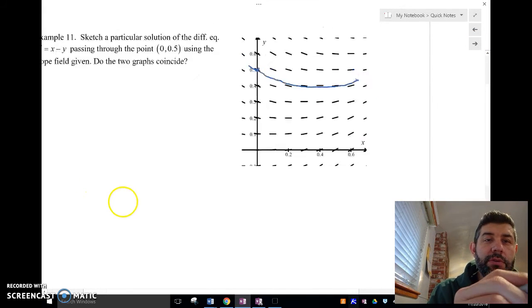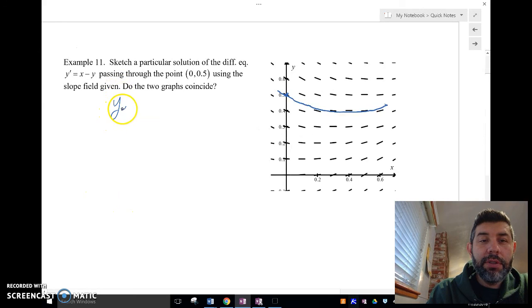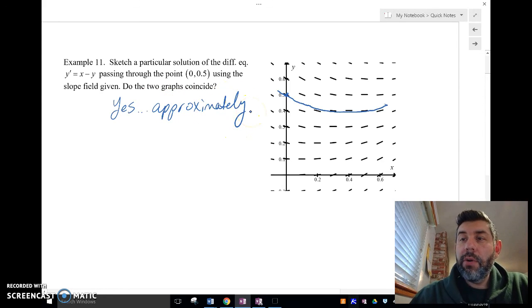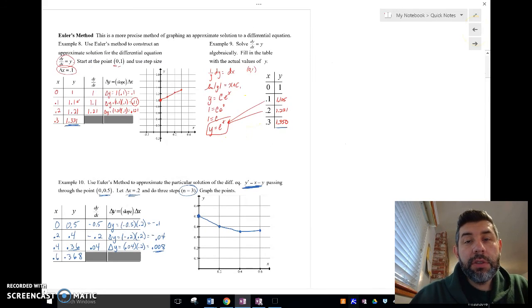So as long as it's approximately close, we did it pretty good with our Euler's method for approximating it. So do the two graphs coincide? Absolutely. Yes. Well, approximately, yes. Approximately. Which is what we wanted to do, right? So again, the Euler's method. Euler's method is a method for approximating the solution to a differential equation. And you just have to remember the steps.